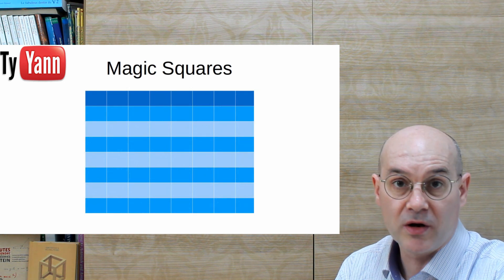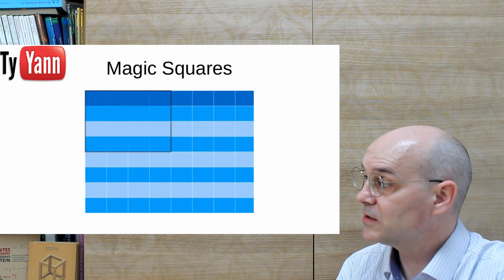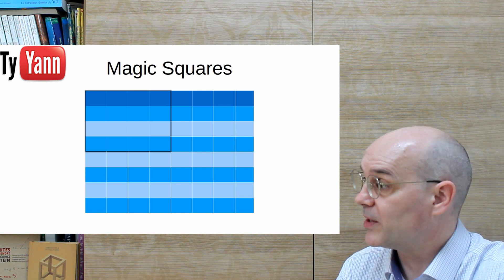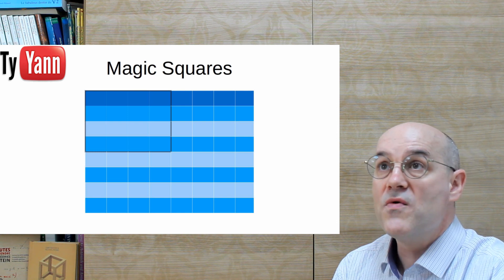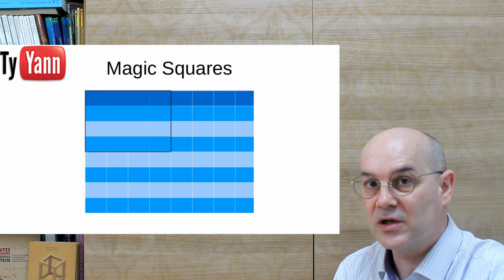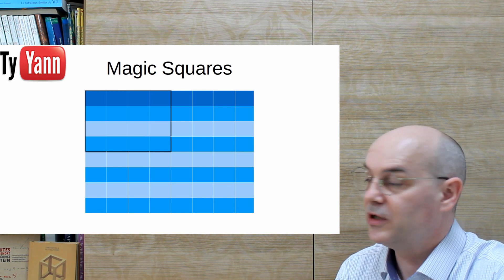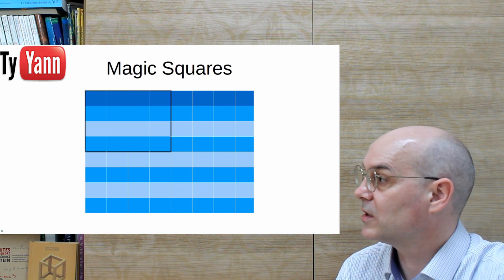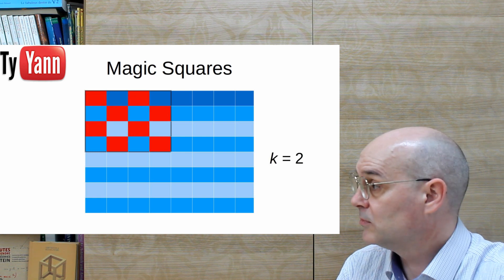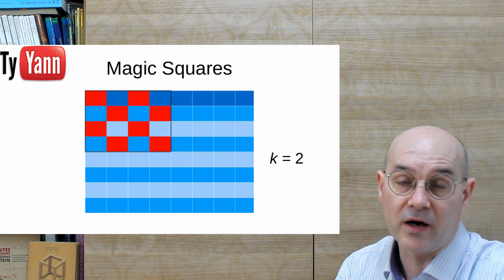So let's do this. Remember, we start with the top left quarter, like this. And we put a red square pattern. Remember, we have to have k red squares in each line and each column of the quarter. So here we can have this easy pattern, like checker-like. You see, in each line, each column, we have only two red squares. Good.